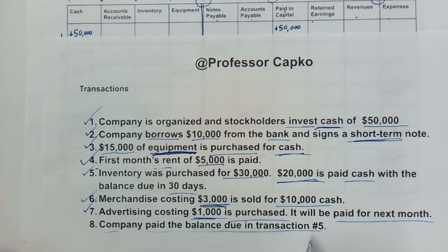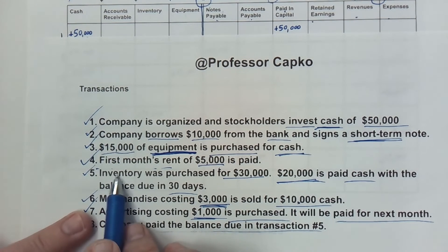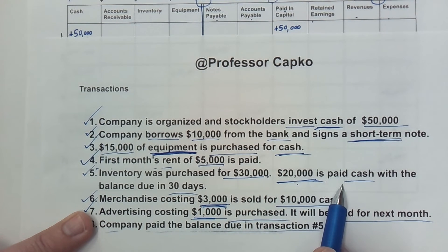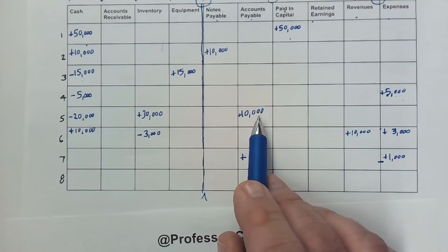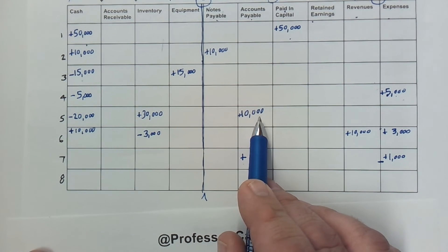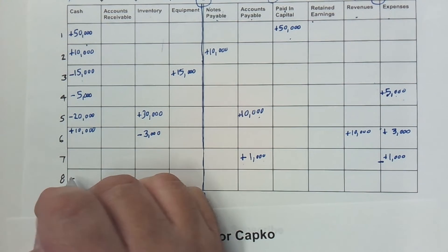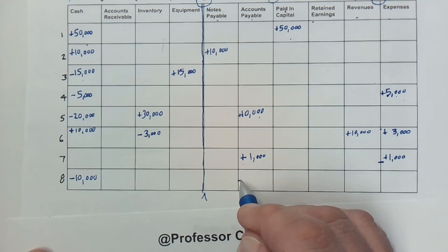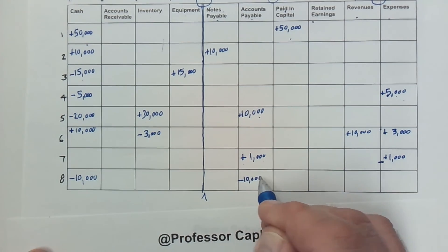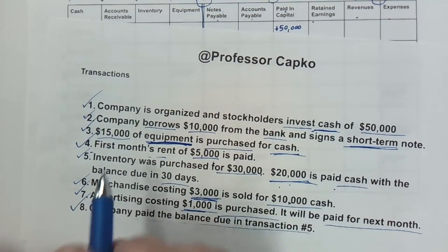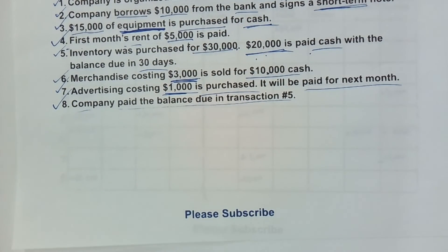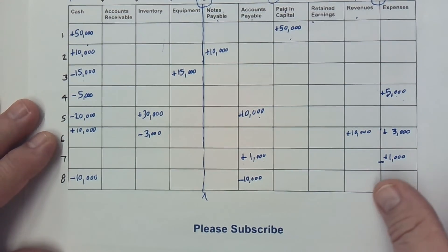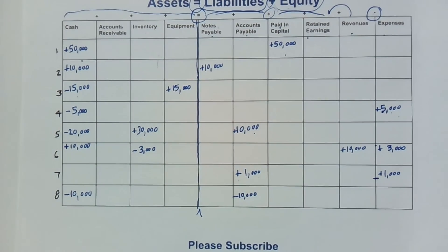Transaction eight: the company pays the balance due from transaction five. Recall that in transaction five we had purchased $30,000 of inventory, paid $20,000 upfront, and owed $10,000 in accounts payable. Now we pay that off — cash is reduced by $10,000 and accounts payable is reduced by $10,000. That is the last transaction, and you can see how the horizontal model tracks all these transactions while remaining in balance.